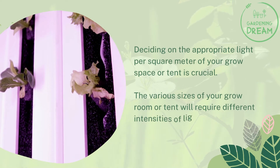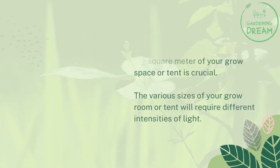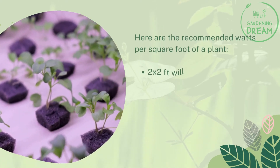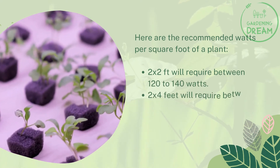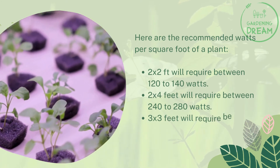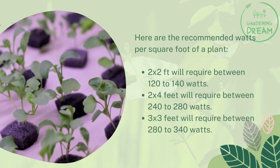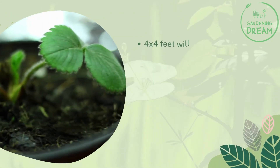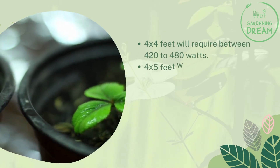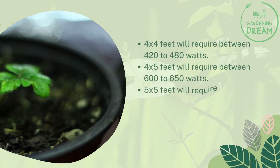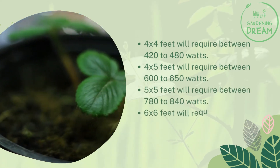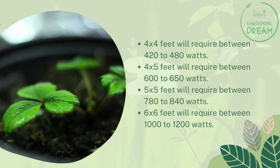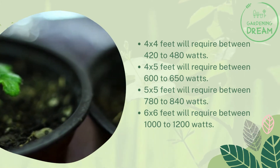Watts per square foot of plant: deciding on the appropriate light per square meter of your grow space or tent is crucial. Here are the recommended watts per square foot: 2×2 feet will require 120–140 watts; 2×4 feet will require 240–280 watts; 3×3 feet will require 280–340 watts; 4×5 feet will require 600–650 watts; 5×5 feet will require 780–840 watts; 6×6 feet will require 1000–1200 watts.